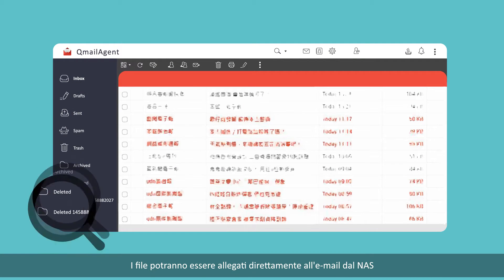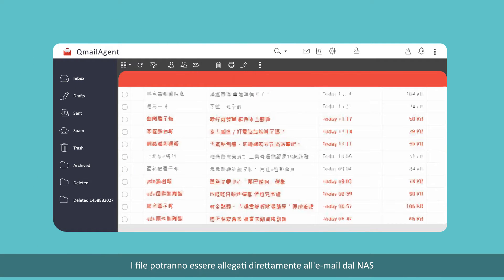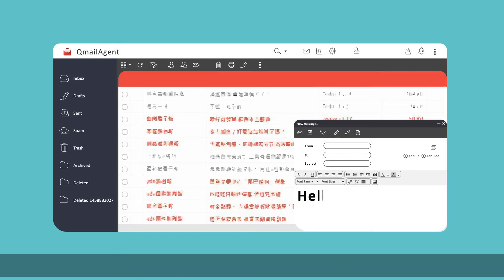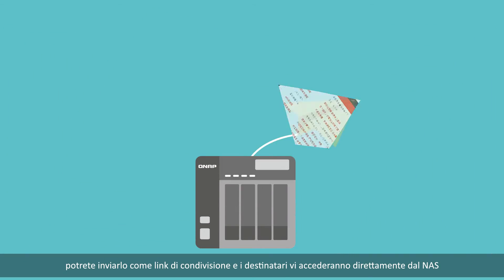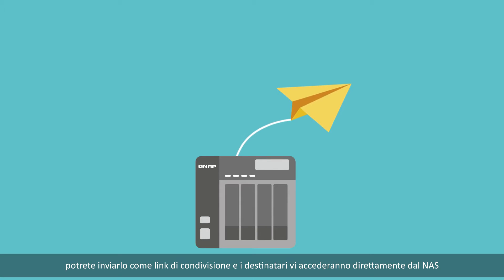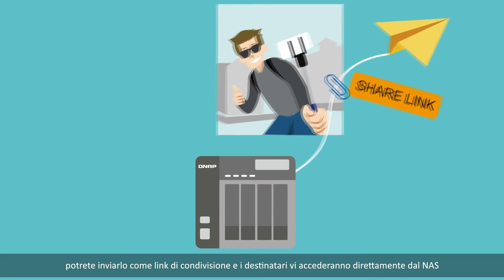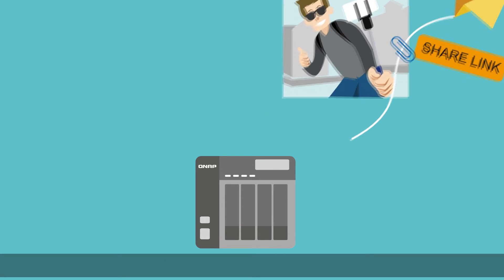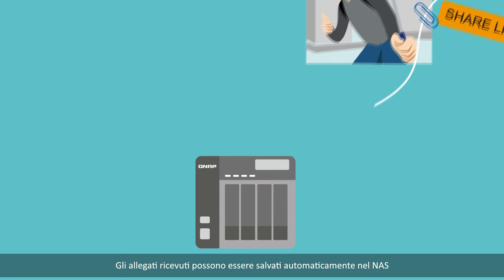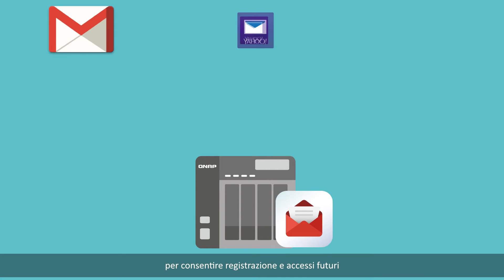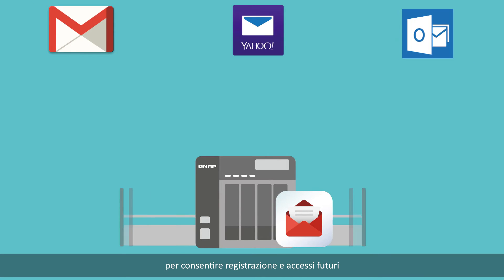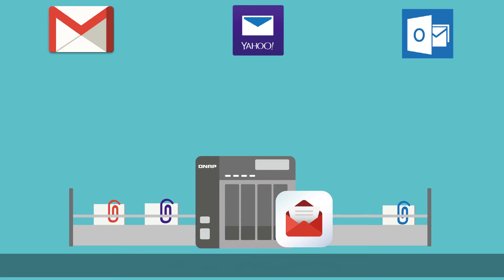You can directly review email content and attachments using QMail Agent. Files can also be directly attached to your emails from the NAS, and if the file is too large to be attached, it can still be sent as a share link to allow your recipients to directly access it from your NAS. Attachments you receive can be automatically saved to the NAS for convenient filing and future access.